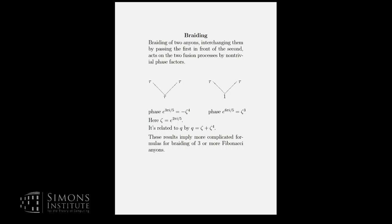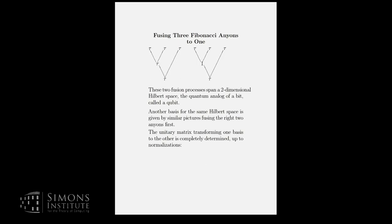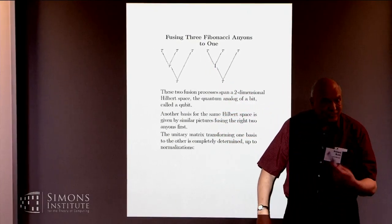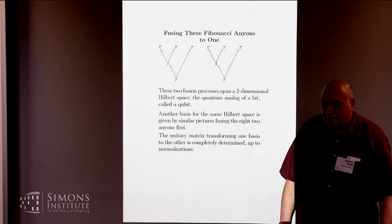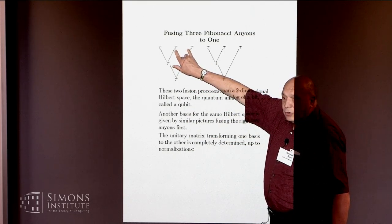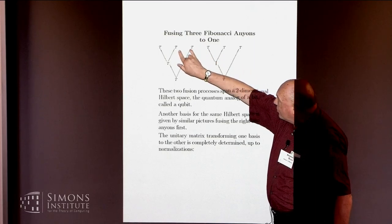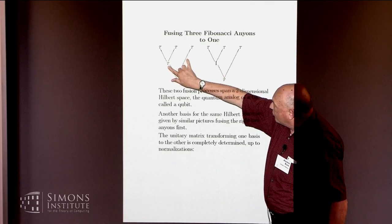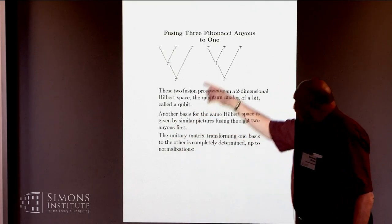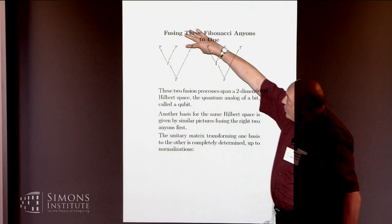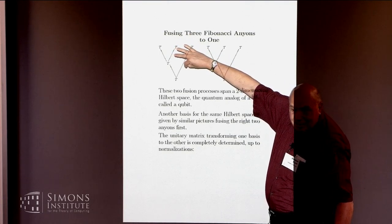If you're going to braid three or more Fibonacci anyons, then you get more complicated fusion rules. Actually, I need to talk a lot faster, but I need to also draw this picture for you. If you were to braid these two, then depending on whether you're in this picture where you fuse to tau or this picture where you fuse to 1, you're going to end up with phase factors like what we had on the other slide. If you're going to braid these two, you're in a different situation because these are not fusing to tau or to 1. These are doing some other stuff first and then fusing.